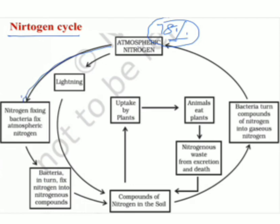Atmospheric nitrogen is fixed by nitrogen-fixing bacteria, which converts it into nitrates and ammonia. These compounds mix with soil and are absorbed by plants. When animals eat plants, nitrogen compounds enter the animal body. When animals and plants die, their bodies decompose and nitrogen returns to the soil again — and again it is taken up by plants. This is the nitrogen cycle from atmosphere to plants, plants to animals, and back to soil.